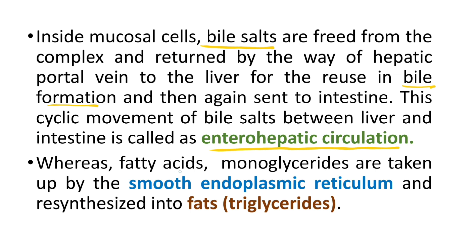Whereas fatty acids and monoglycerides are taken up by the smooth endoplasmic reticulum and resynthesized into fats or triglycerides. Inside the intestinal mucosal cells, the bile salts are separated from the complex and sent to the liver through the hepatic portal vein for the formation of bile, which is reused again in the intestine. Fatty acids and monoglycerides are taken up by the smooth endoplasmic reticulum present inside the intestinal mucosal cells, where fats are resynthesized.